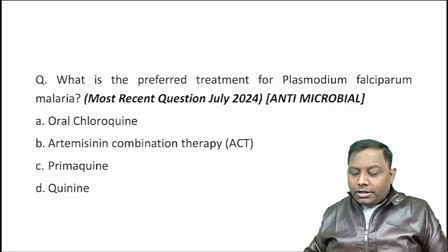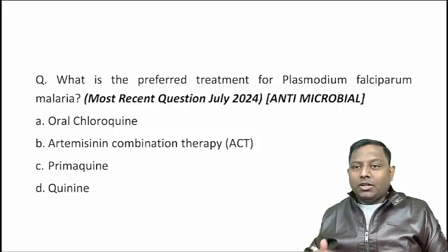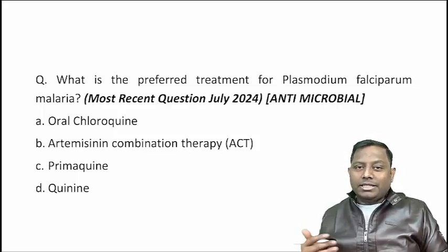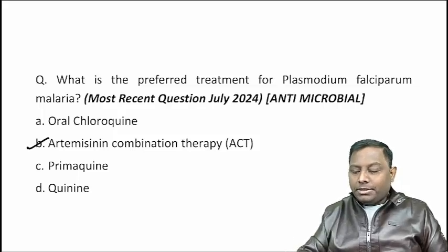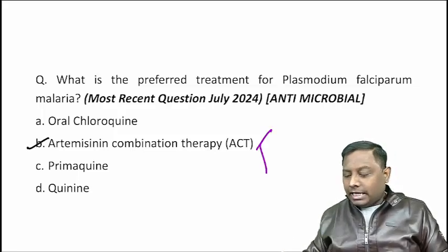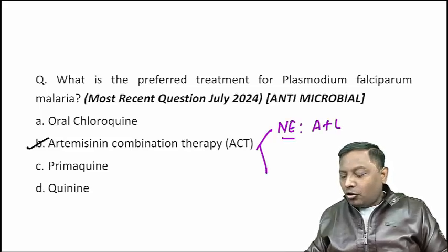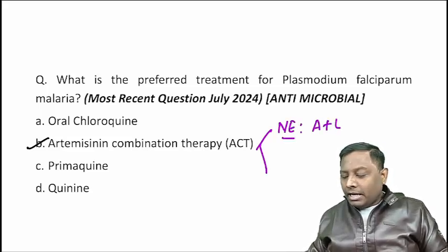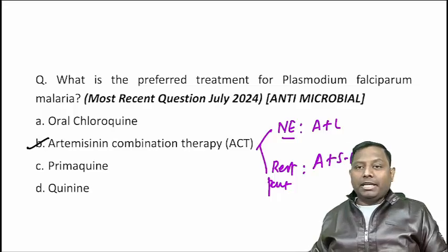Next question: what is the preferred treatment for Plasmodium falciparum? Since P. falciparum is chloroquine-resistant, artemisinin combination therapy is the drug of choice. If the patient is from a North East state, we use artemether plus lumefantrine. If the patient is from the rest of the country, we use artesunate plus sulfadoxine-pyrimethamine (ASP).